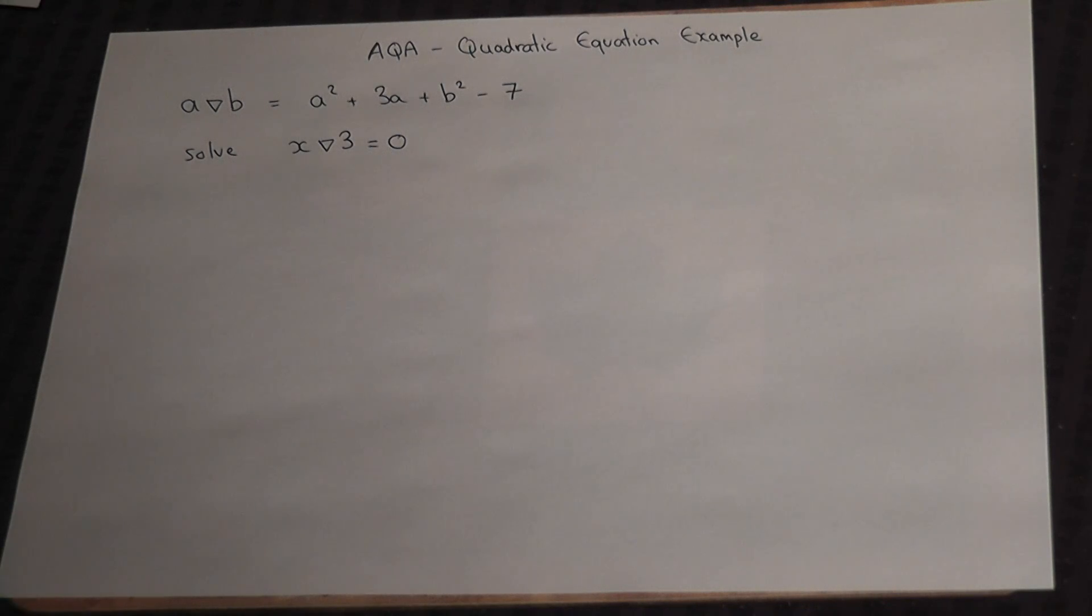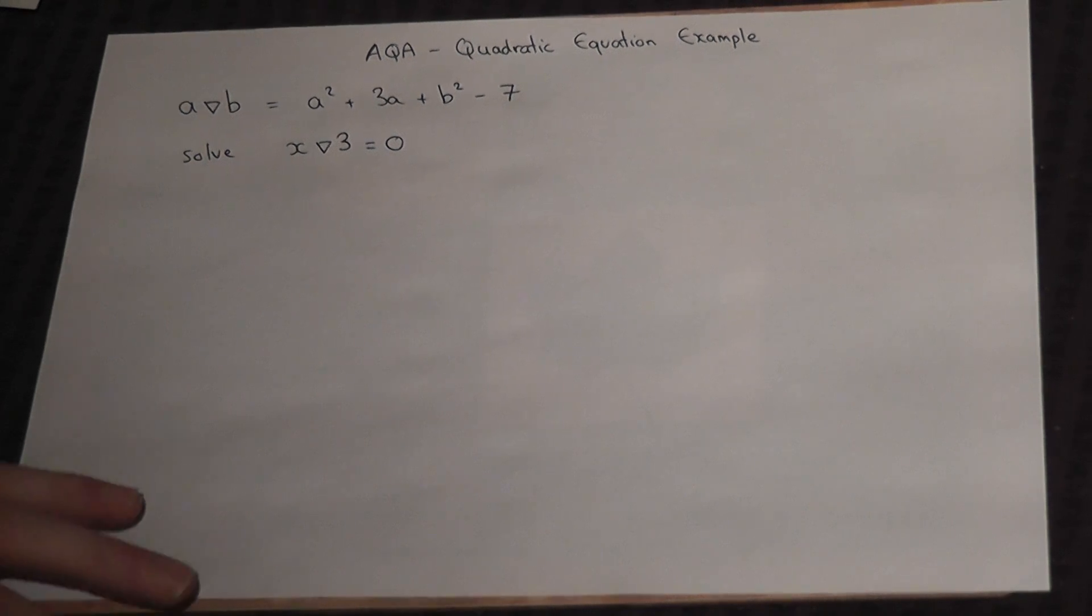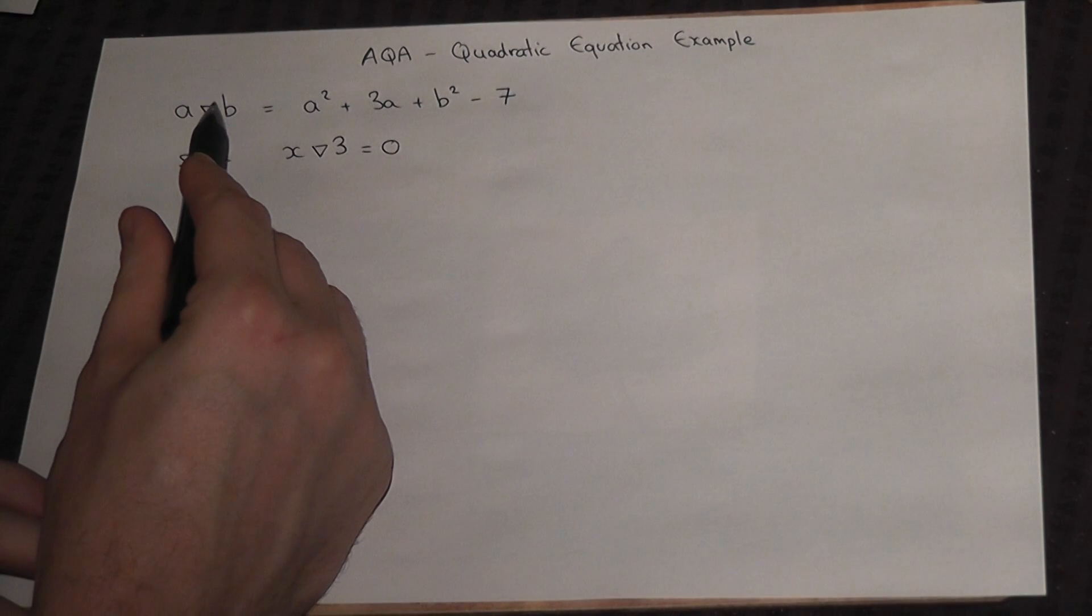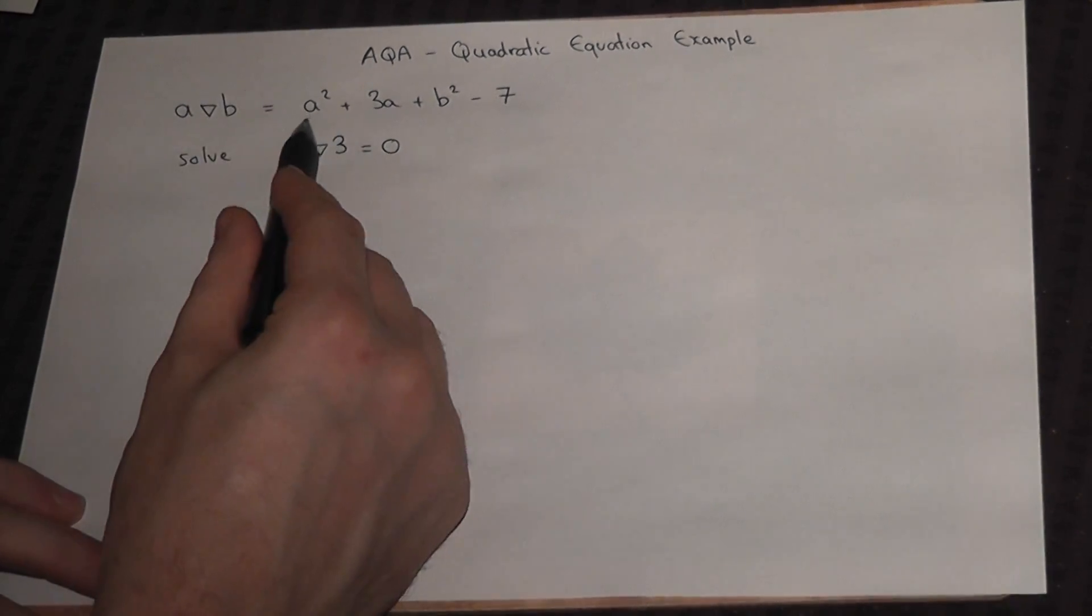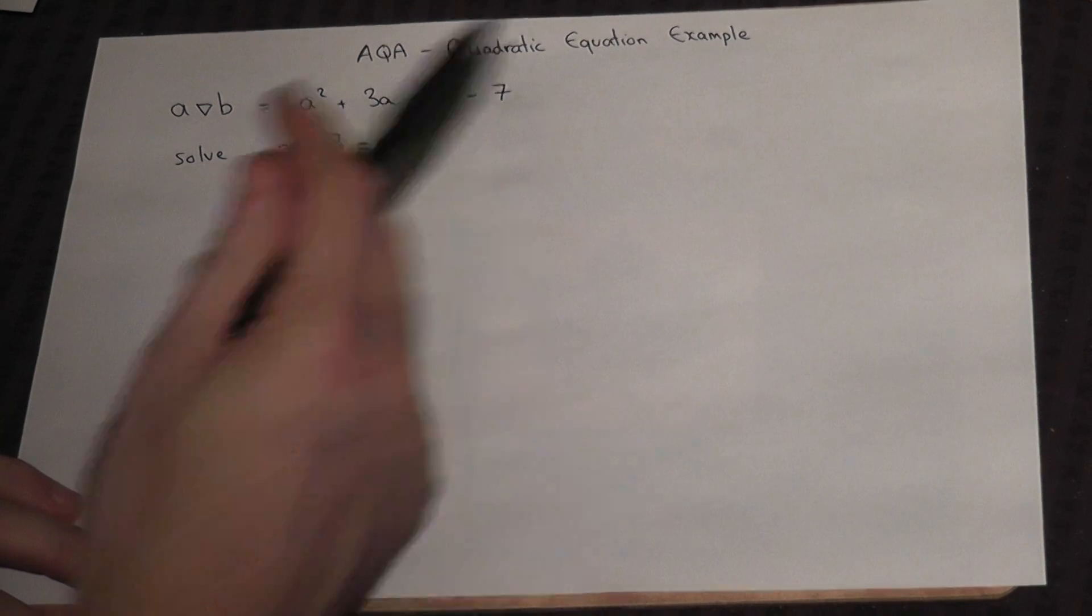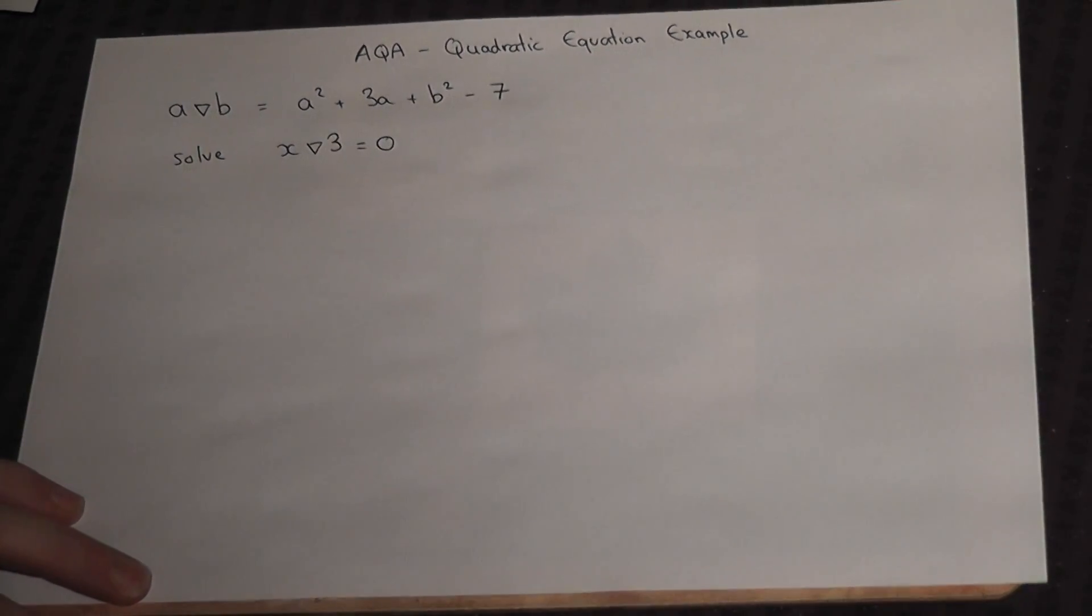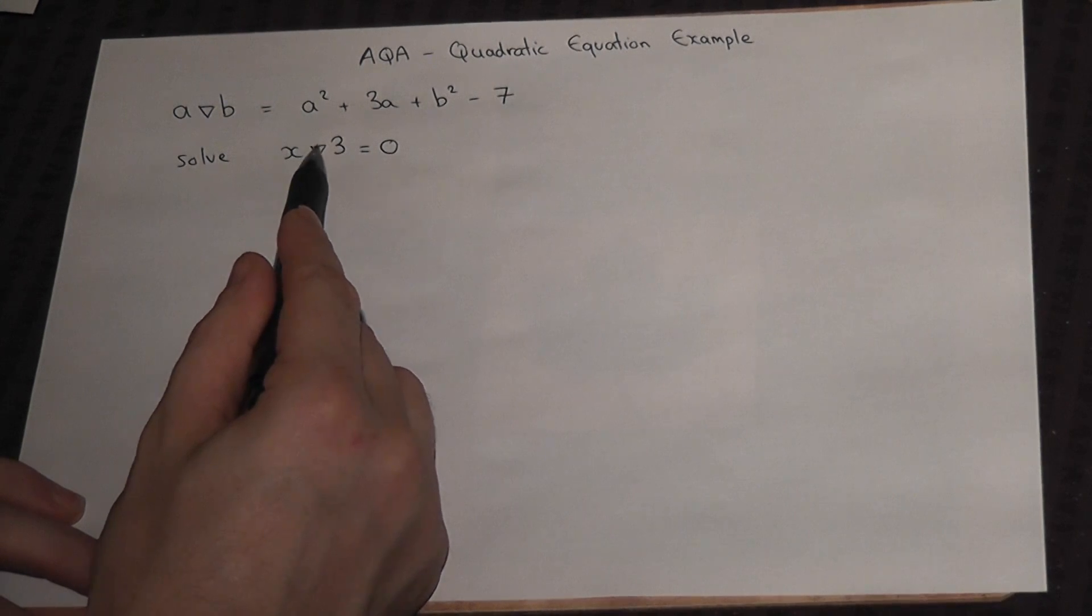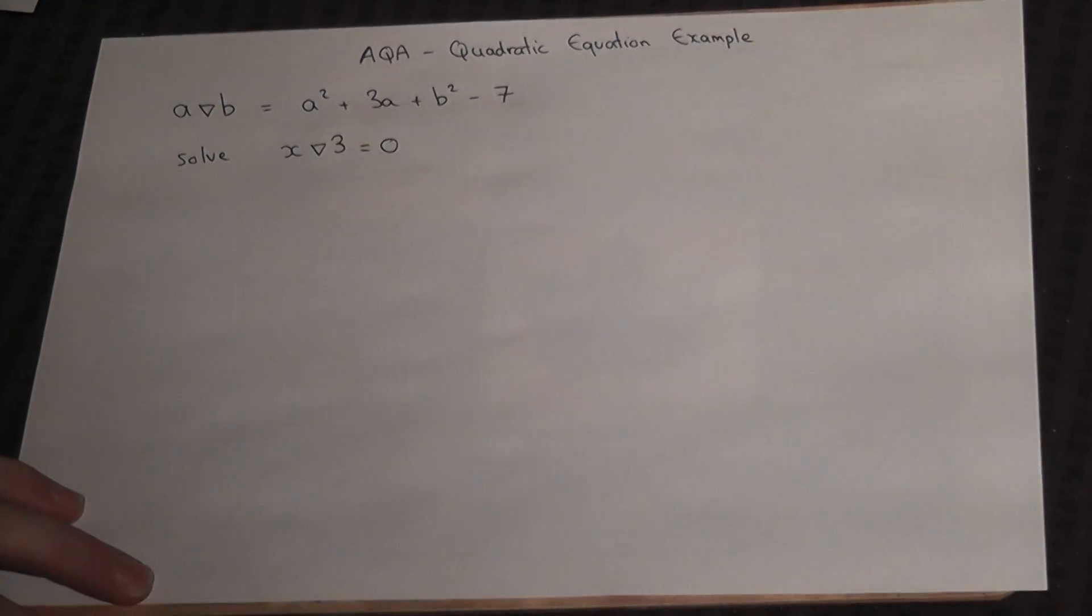This video talks through how the quadratic equation question can often be phrased in the AQA examination. It's often given in the form of an operator in which it gives you an A and a B and defines this triangle thing here to mean this equation. This has been made up completely, it's nothing special, but we're then told to solve an equation x operator 3 equals 0.